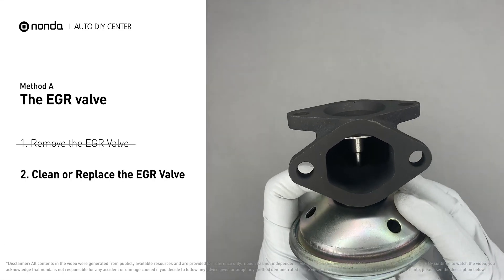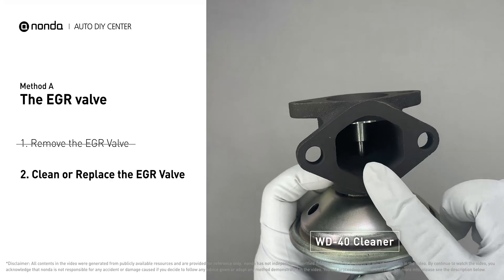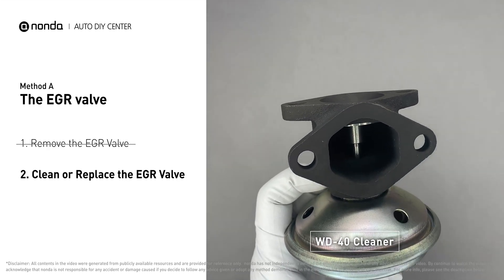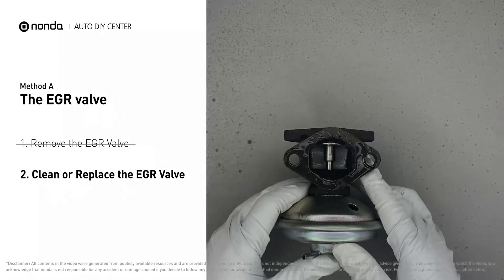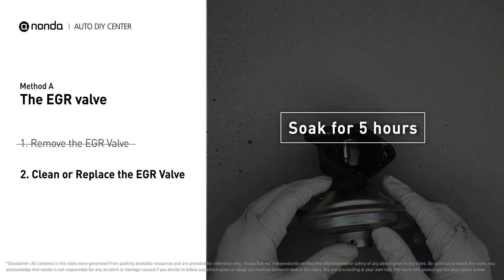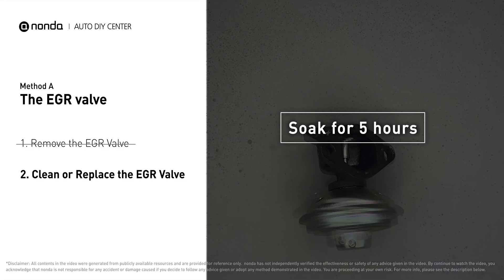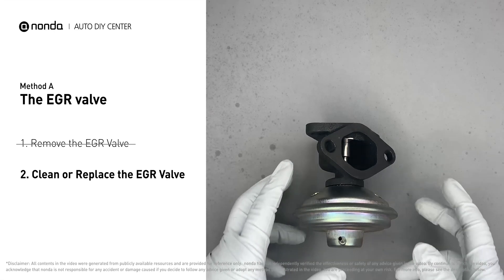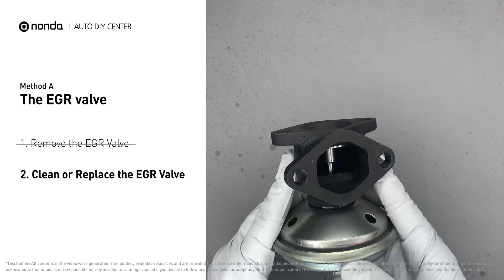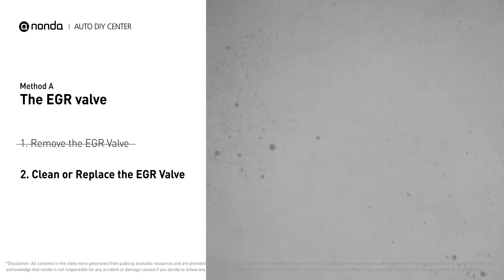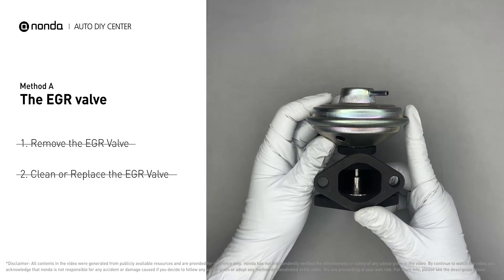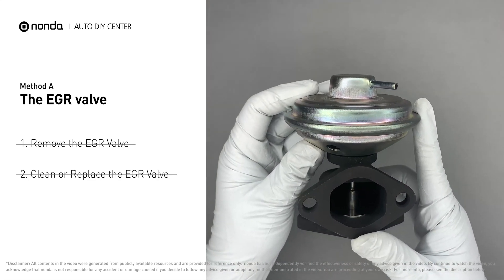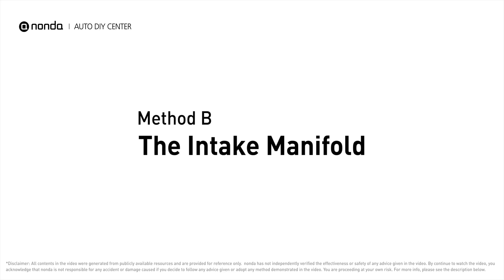Turn the EGR valve upside down and fill it up with WD-40 cleaner. Let it soak for five hours for the solvent to get rid of all the carbon buildup. After the clean EGR valve gets dry, reinstall it back into the car. If it is too dirty to be cleaned, you may replace it with a new EGR valve.